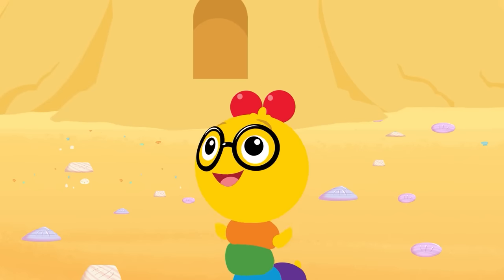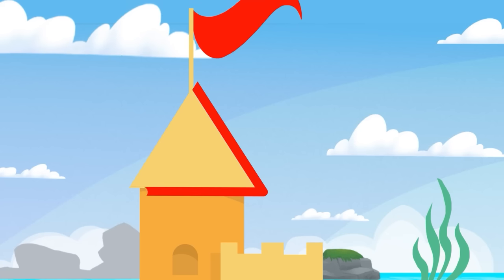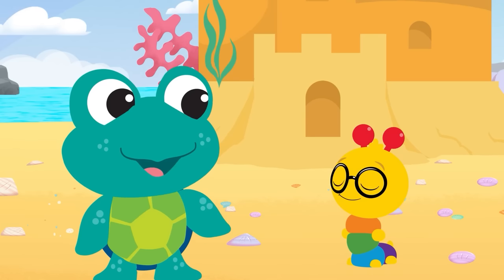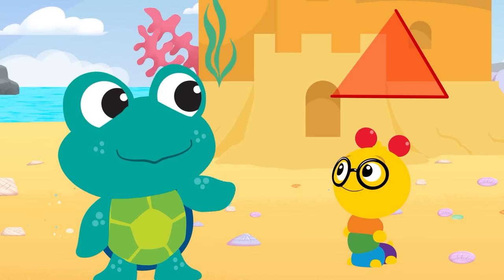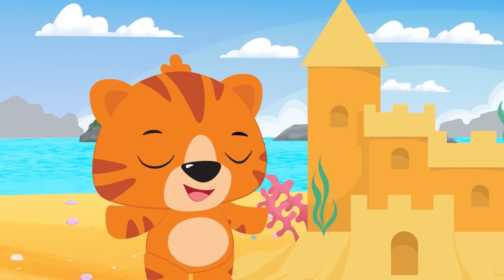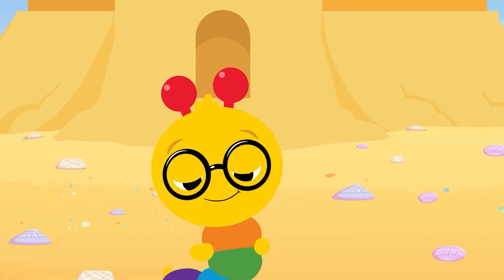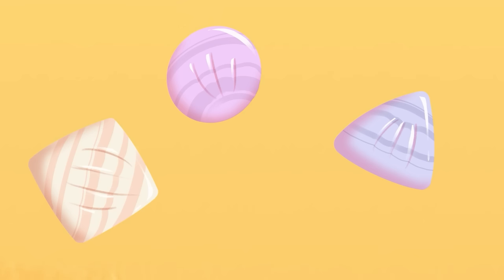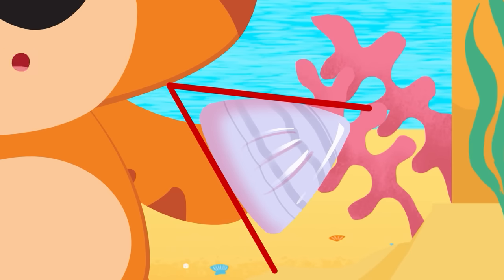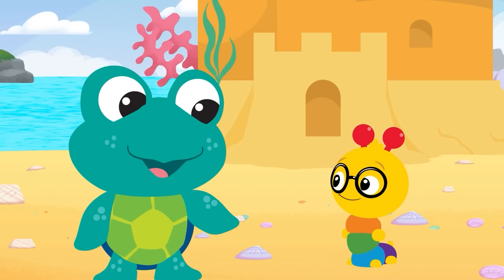What a great idea, Neptune! What shape do you need to decorate that part of the sandcastle, Neptune? I need one that has one, two, three sides. Triangles have three sides. Can you help us find a shell that's shaped like a triangle? Here's the triangle! It has one, two, three sides. Now I want one that has one, two, three, four sides.